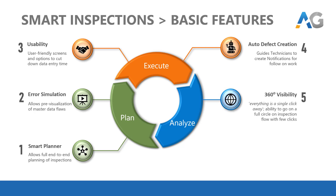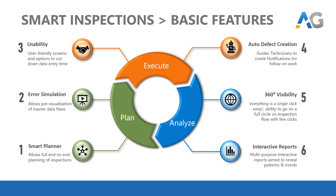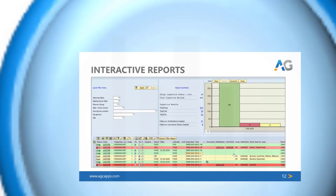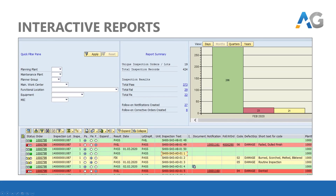360 degree visibility is one of the most famous features of Smart Inspections. It allows anyone to go through the entire business scenario from one corner to the other, regardless of where you start from. And finally, the interactive report suite takes you to depths which have never been possible in SAP before. They are laid out specifically to improve user experience and efficiency, allowing users to find trends and patterns very easily.